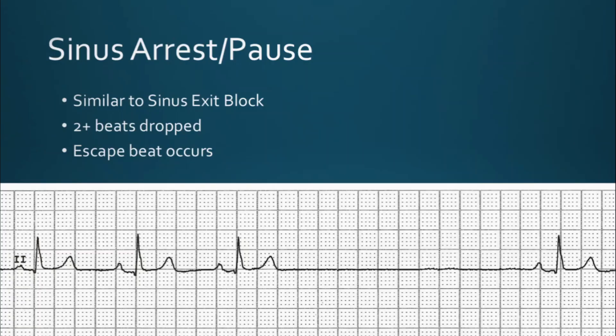Sinus arrest occurs when there's a temporary cessation of impulses from the SA node. Usually these patients will have sick sinus syndrome, meaning their SA node is not working appropriately. Sinus arrest and sinoatrial exit block are very similar, except in a sinoatrial block the pause is directly correlated to the R-to-R interval, whereas a sinus arrest is not a multiple of R-to-R intervals. If the sinus arrest is long enough, other pacemaker cells will start to conduct impulses — called escape beats — to prevent asystole. In sinus arrest, there will be two or more beats dropped, then the escape beat will occur. The escape is a compensatory mechanism and can occur slightly earlier or later than the rest of the rhythm.